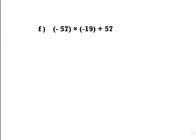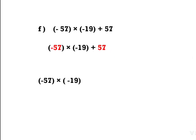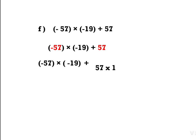One more question of this type: (−57) × (−19) + 57. In the first part there are two numbers, but in the second part only one number. Here 57 is common. We write the first number as (−57) × (−19), and since the second part has only one number, we can write 57 as 57 × 1 — no change in the product. We use the distributive property.